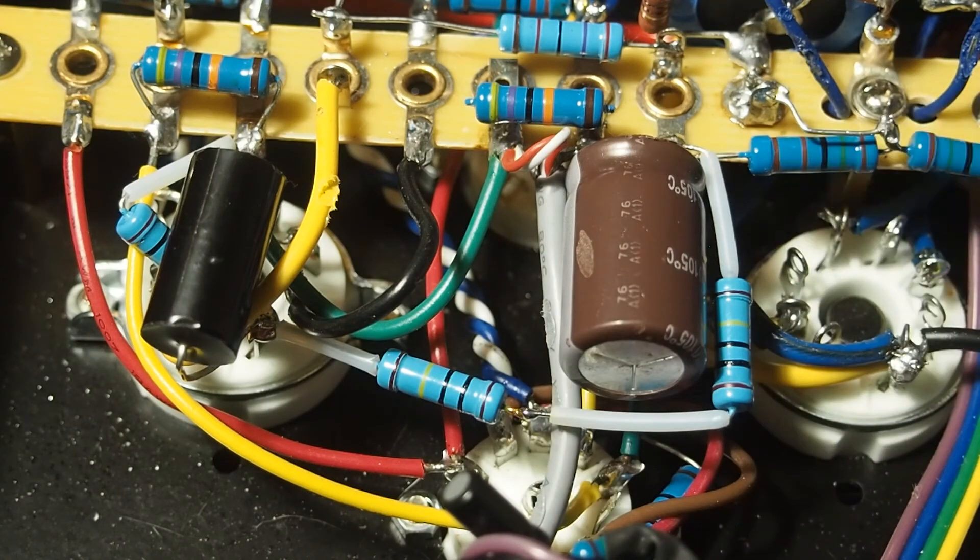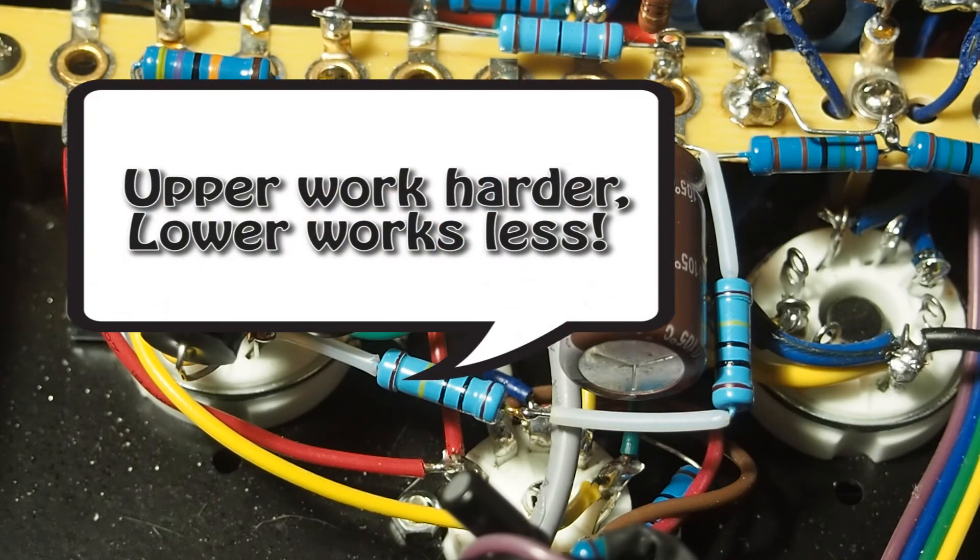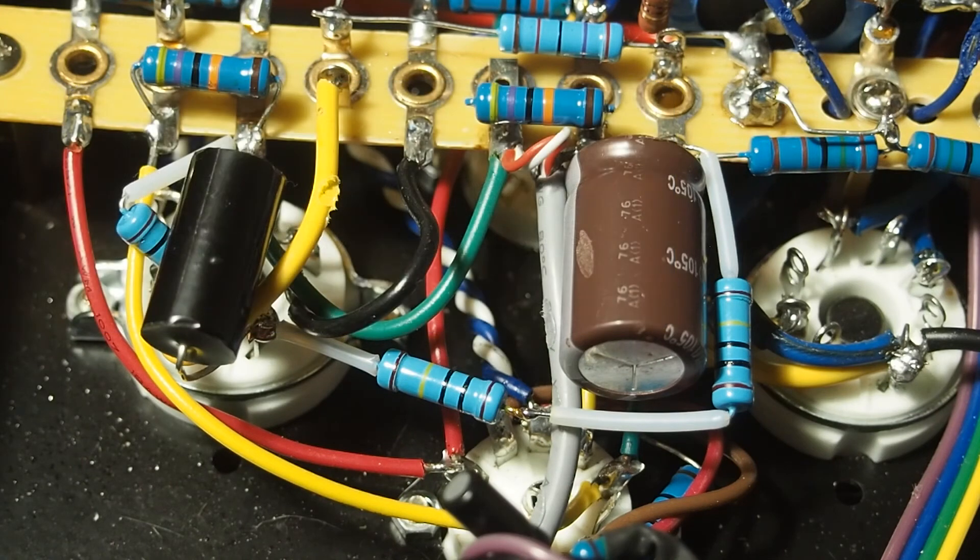And by doing this, it makes the upper section work less and makes the bottom section work harder, which evens out the sine wave and helps improve the distortion from this amp, especially with the volume turned up.